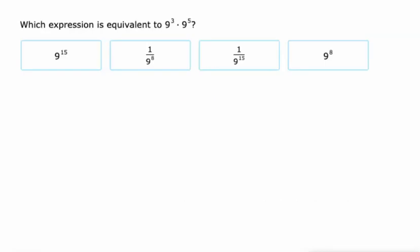They start off pretty basic here. We've got the same base, so we keep the base and add the exponents. 3 plus 5 is 8, and there it is, 9 to the 8th power. That's a basic property of exponents. When you're multiplying numbers with the same base, add the exponents.